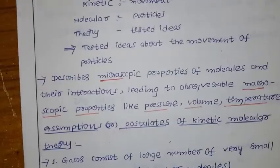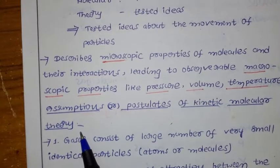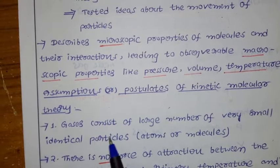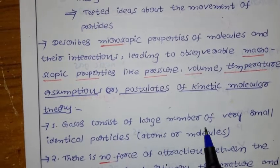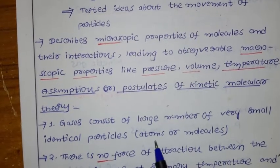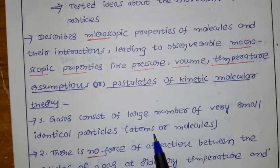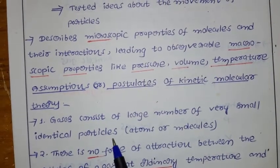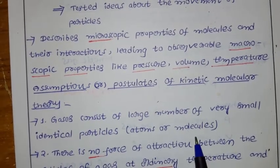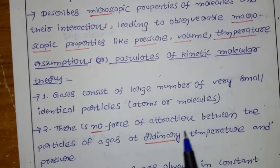Now let us discuss the assumptions or postulates of kinetic molecular theory. The first postulate is: gases consist of a large number of very small, identical particles — these particles may be atoms or molecules.